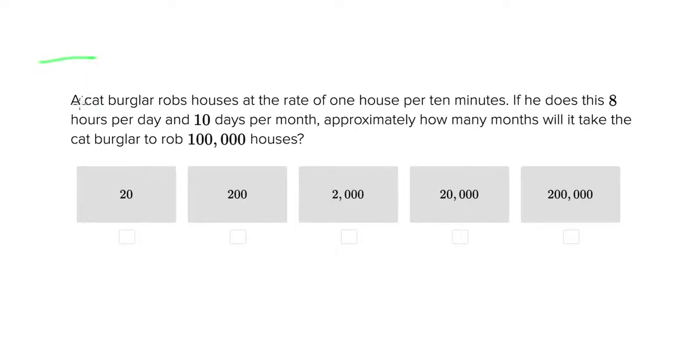A cat burglar robs houses at the rate of one house per 10 minutes. So you're going to write one house here at the top and include the unit of time by which these houses are being robbed here on the bottom. We know that one house is robbed every 10 minutes.